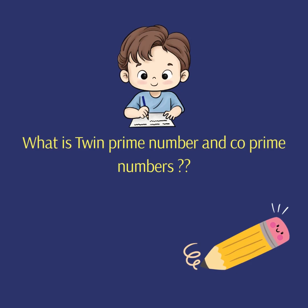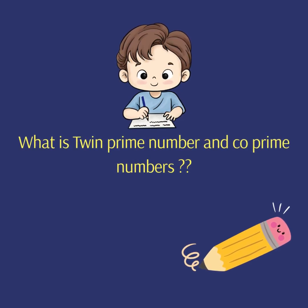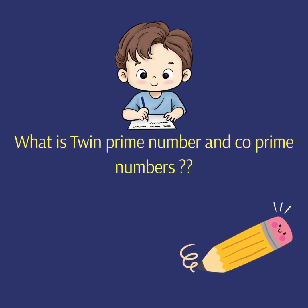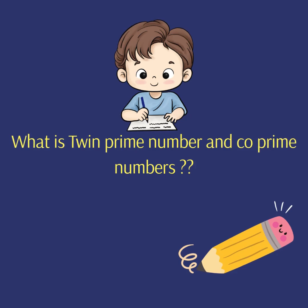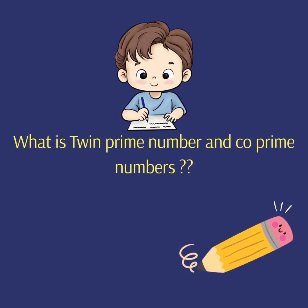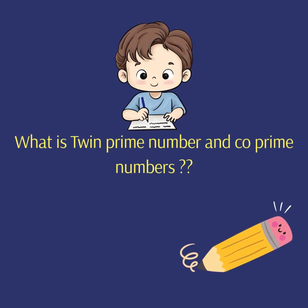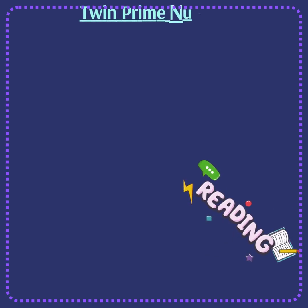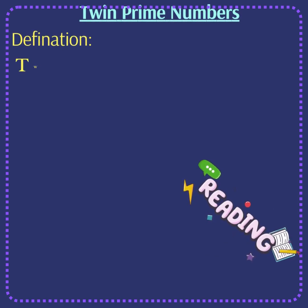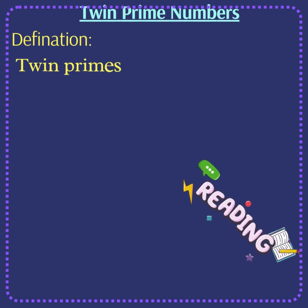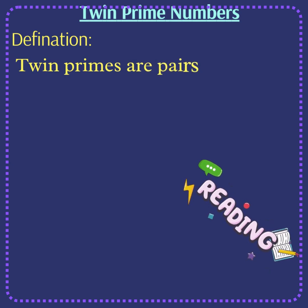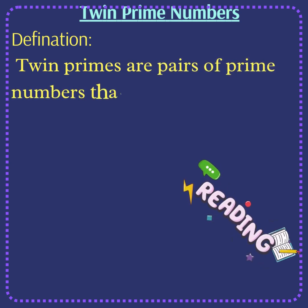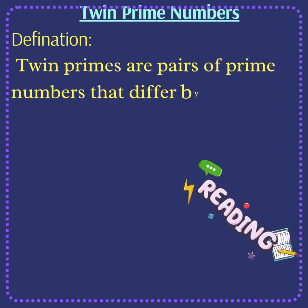Today we will discuss prime numbers, twin prime numbers, and co-prime numbers. Twin prime numbers: twin primes are pairs of prime numbers that differ by exactly two. Examples include three and five, five and seven.